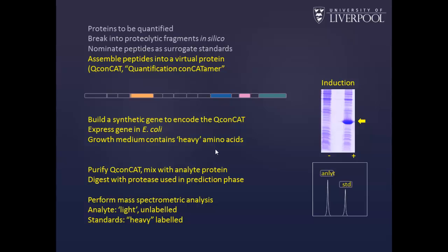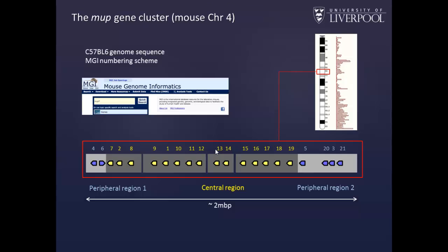We express that gene in bacteria, usually E. coli, and we grow it in media that contains heavy or stable isotope labeled amino acids. We then purify the protein after it's expressed and mix it with the analyte proteins, then digest with proteases. The nice thing here is that because we are assembling peptides on the basis of their proteolytic fragmentation, these are reconstructed and reiterated in the standard. We then do the mass spec and get the analyte and the standard signal.